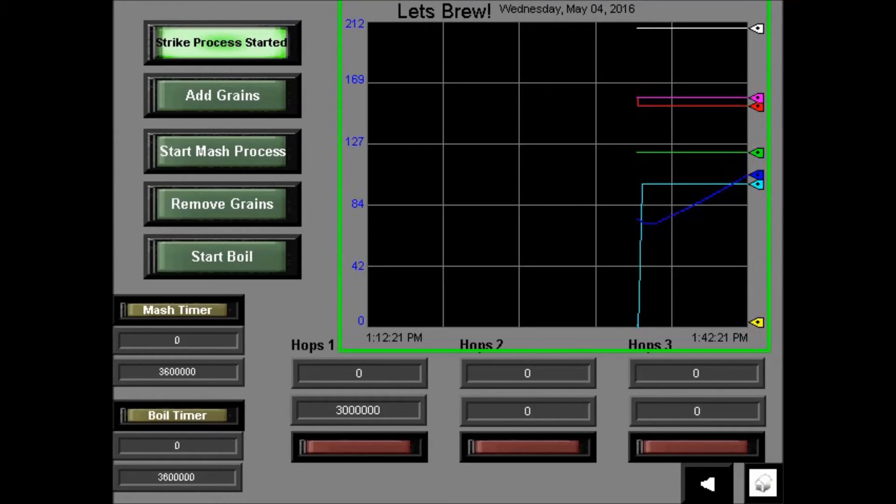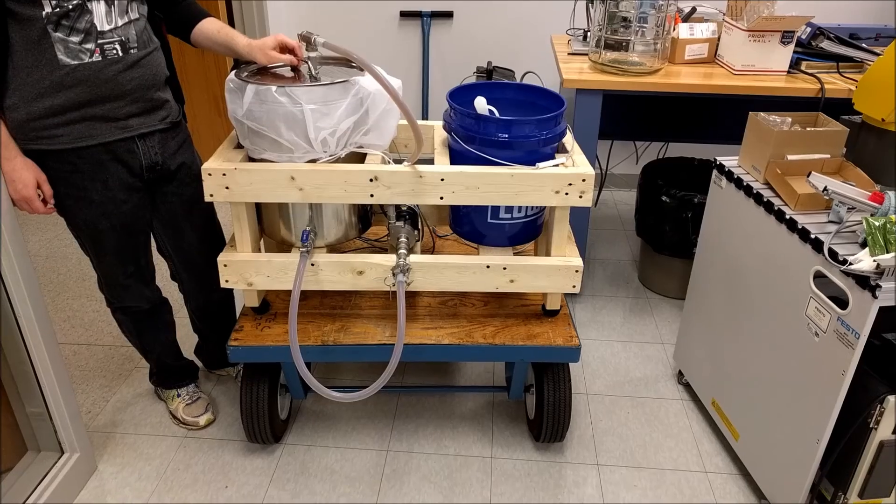The user can then lower the grains into the heated water. Once the grains are set, the user can press the start mash process button. This starts the mash timer, which starts the mash subroutine and turns the pump on for the designated time.